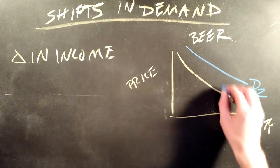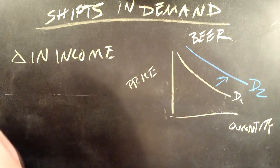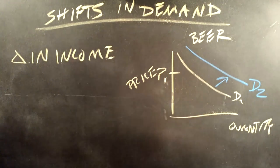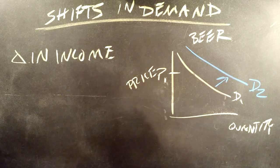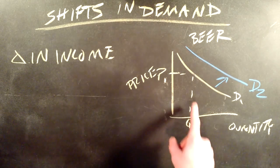We'll call this D2. As income goes up, for a given price, let's say P1, the quantity demanded will increase. So P1, Q1 with our original demand curve, we get Q1, price over to the demand curve down to quantity.